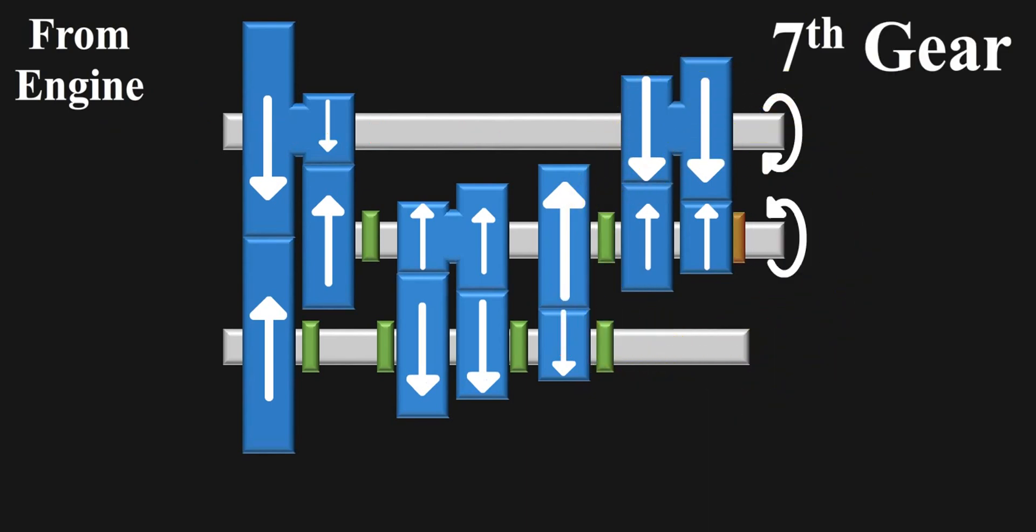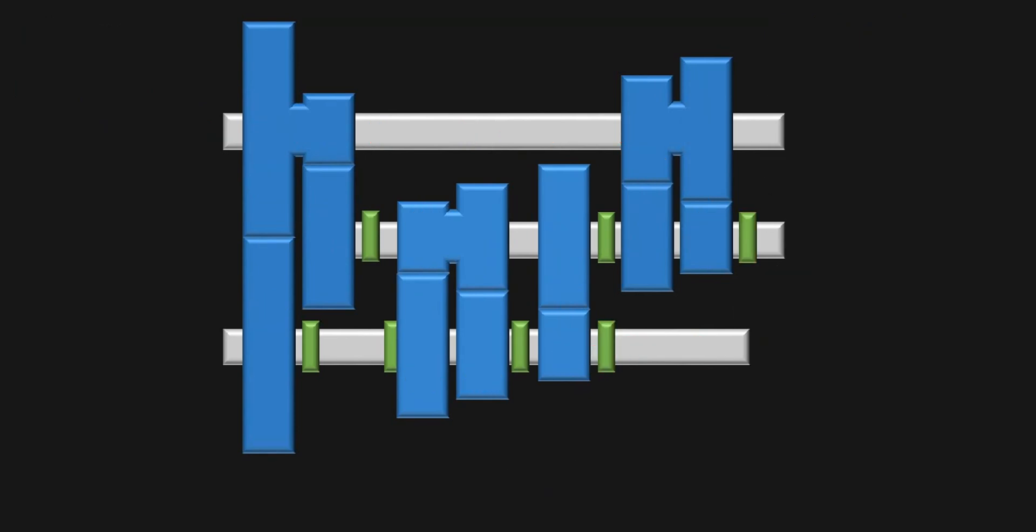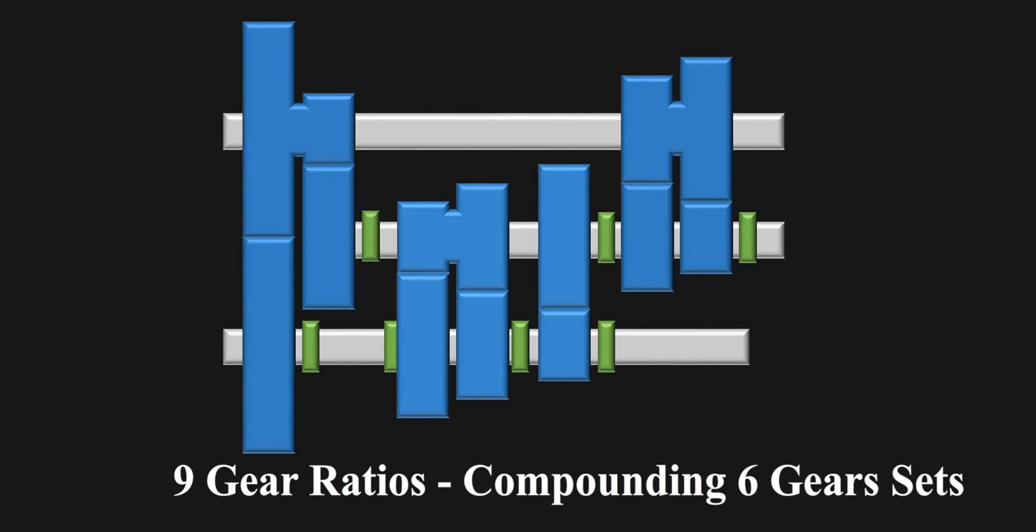Now, by engaging third gear on this shaft, we can again get three more combinations working as seventh, eighth, and ninth gear. Out of which, eighth and ninth are overdrives. By this technique, nine gear ratios are made just by compounding six gear sets. As less number of gear pairs are required, the weight of the system is reduced significantly.